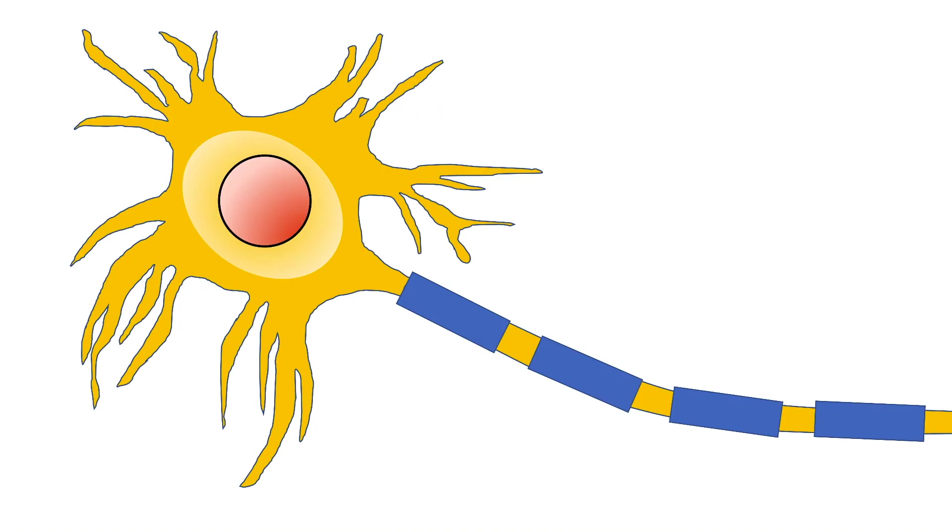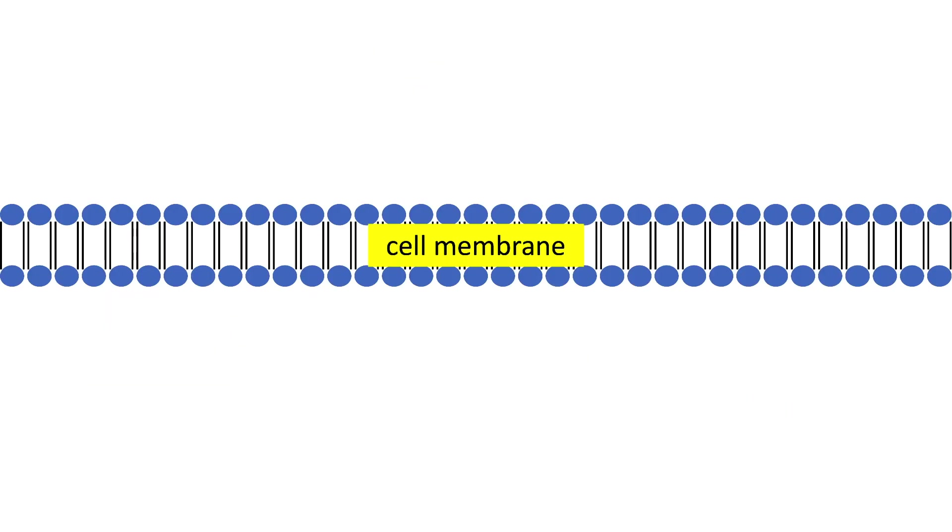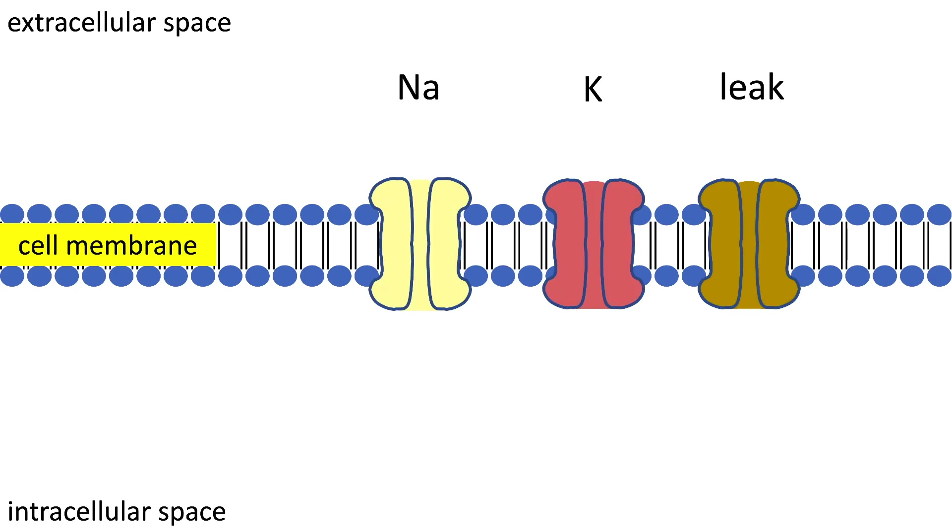Let's look at a single cell of a squid axon. In general, a cell membrane separates the intra from the extracellular space. There exist channels that connect both regions, namely the sodium, potassium, and the leak channel.